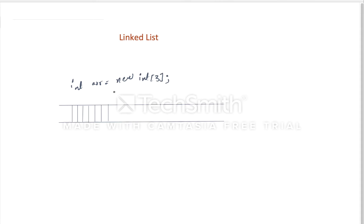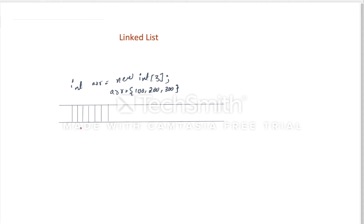Array is declared with size 3. So Arr will save three elements. The memory manager finds a location where there are continuous three blocks available. Suppose it puts the array here - continuous 3 blocks.